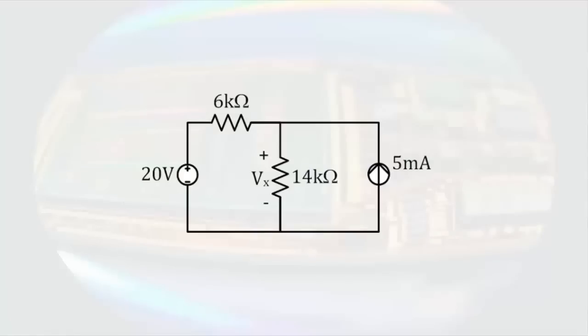This circuit can be analyzed with a single node equation. As always, we start by choosing a reference node and then identify the other nodes. The node on the left is connected to a voltage source that is connected to the reference node. So the voltage at the non-reference node must be the value of the source. The voltage at the other node is clearly Vx. If then I draw a direction for the current through the 6-kiloohm resistor and then draw the current through the 14-kiloohm resistor so it agrees with the passive sign convention, we can write a node equation.